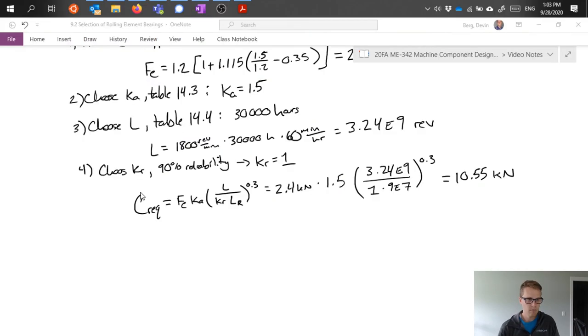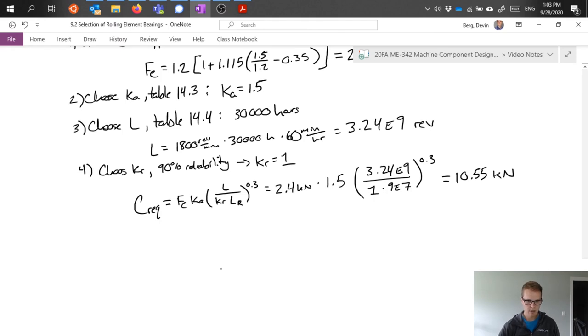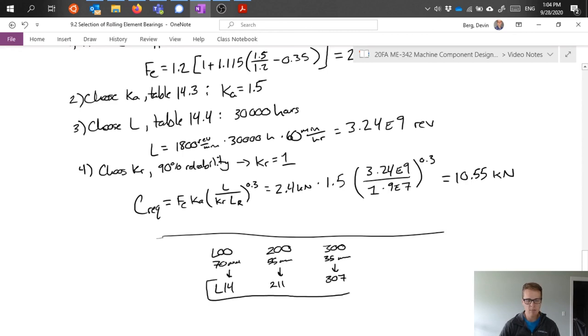So going back here, I would just make note of that I have three possible options based on this requirement, which is in the L00 series, the 200 series, and the 300 series. My options were, or my requirement came out as 70 millimeters, 55 millimeters - all of these are bore diameters - and 35 millimeters, which led me to an L14, a 211, and a 307. And then somehow, between my other possible requirements for the project, I would select among those three to be a potential solution to this problem. Thanks.